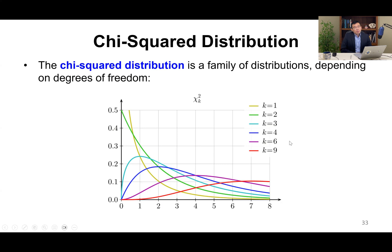Chi-square distribution is a family of distributions depending on the degree of freedom. If the degree of freedom is 1, this is one distribution shape. When the degree of freedom is 6, this is a different chi-square distribution shape.